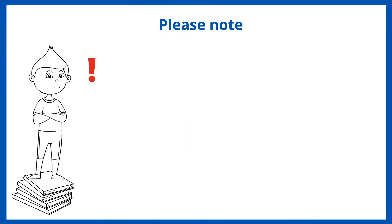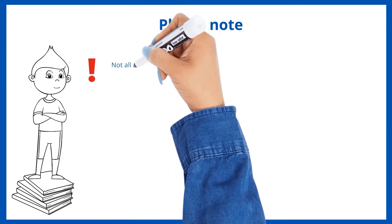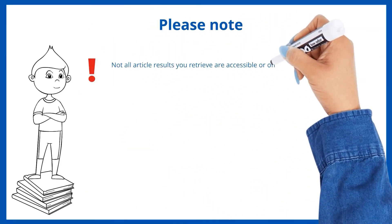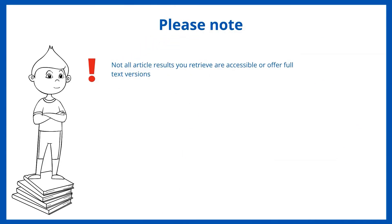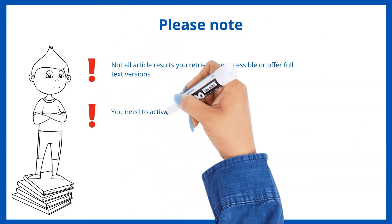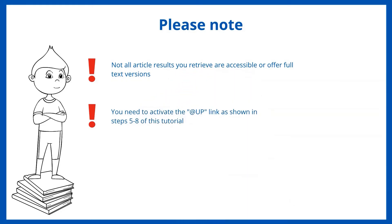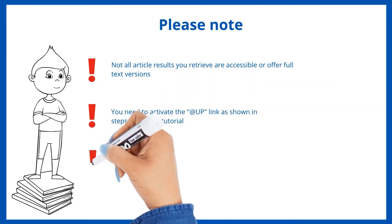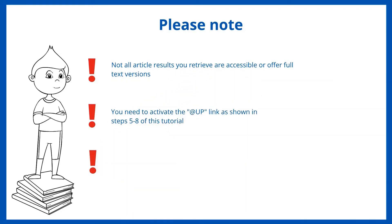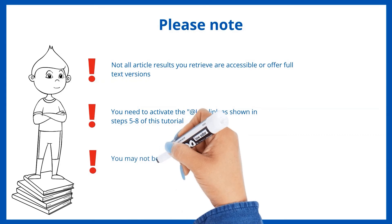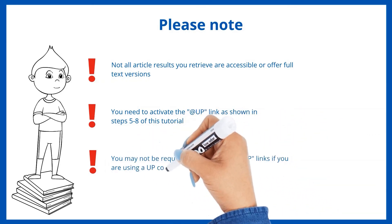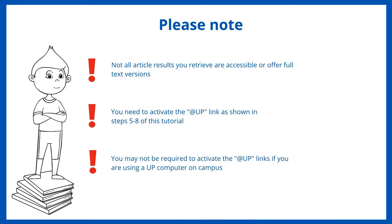Please note, not all article results you retrieve are accessible or offer full text versions. You need to activate the at UP link as shown in steps five to eight of this tutorial. You may not be required to activate the at UP links if you are using a UP computer on campus.